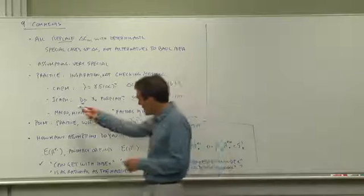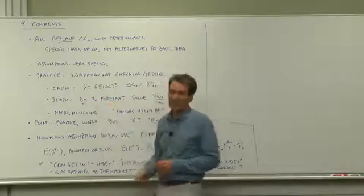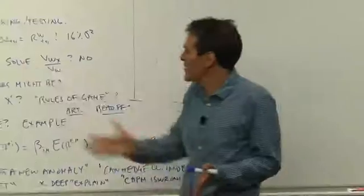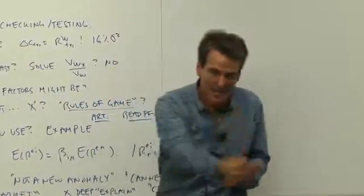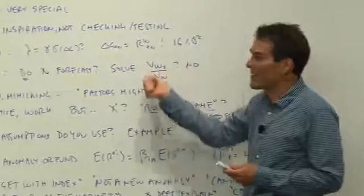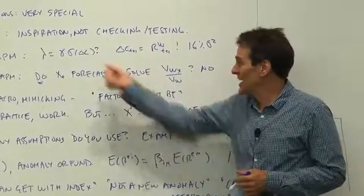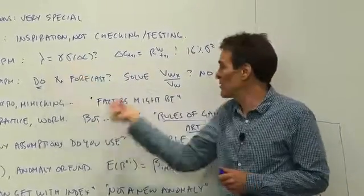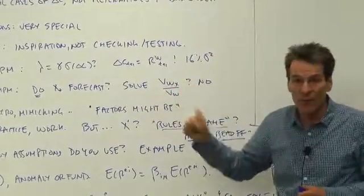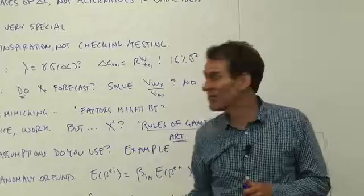Similarly, the ICAPM, we said that the X, the things we're going to use as factors, should be things that forecast future investment opportunities and that the risk premium isn't a free parameter. The risk premium should come from understood derivatives of the value function.